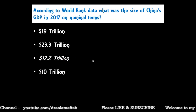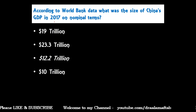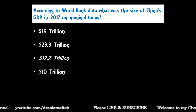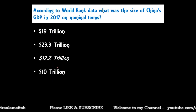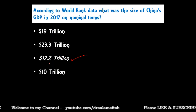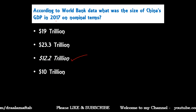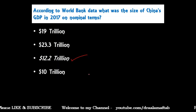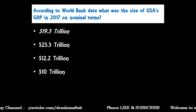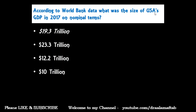Next question: According to World Bank data, what was the size of China's GDP in 2017 on nominal terms? Options are: 19 trillion dollar, 23.3 trillion dollar, 12.2 trillion dollar, or 10 trillion dollar. The correct answer is 12.2 trillion dollar. So China's GDP in 2017 was 12.2 trillion dollar on nominal terms, whereas on PPP terms it was 23.3 trillion dollar.